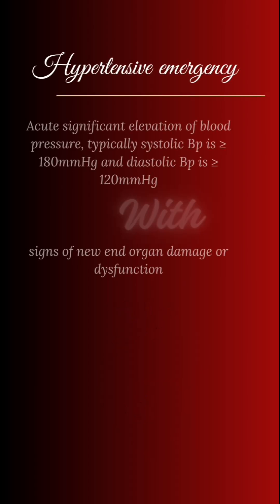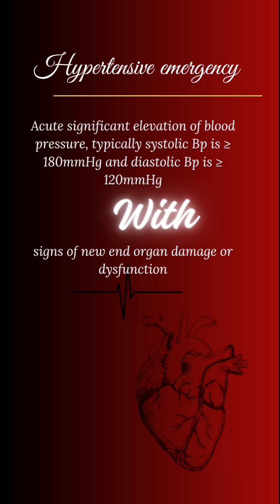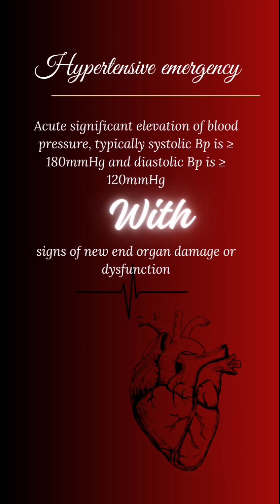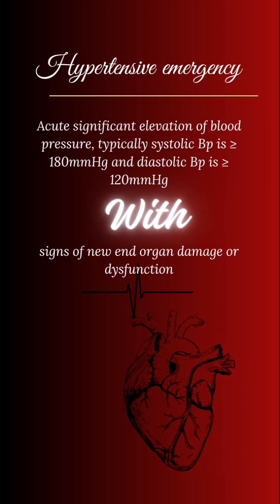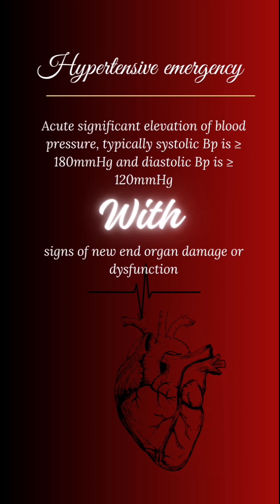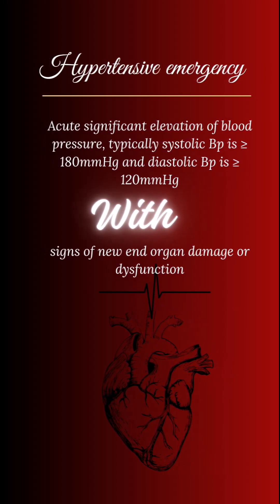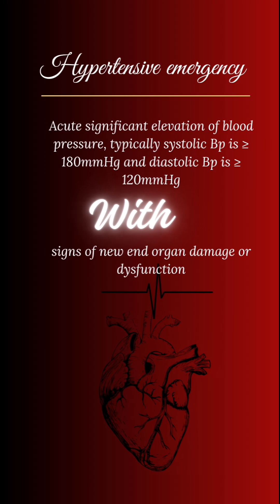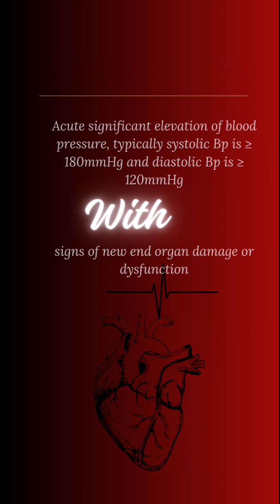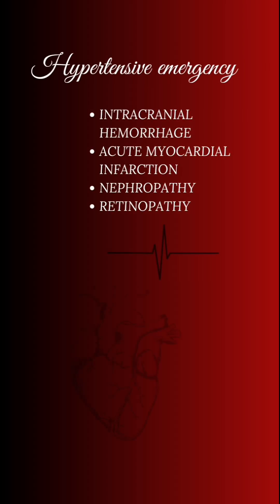Next, hypertensive emergency. It involves the same blood pressure — acute significant elevation, typically systolic more than or equal to 180 mmHg and diastolic more than or equal to 120 mmHg — but with signs of new end organ damage or dysfunction, meaning associated with heart disease, kidney disease, or likewise.